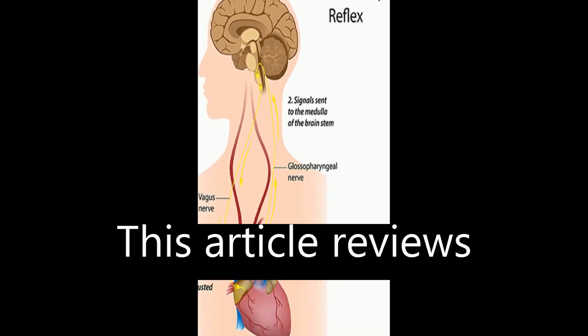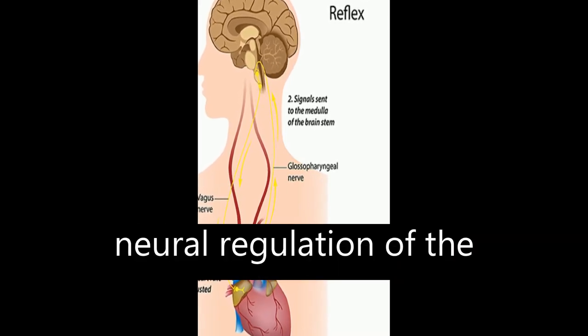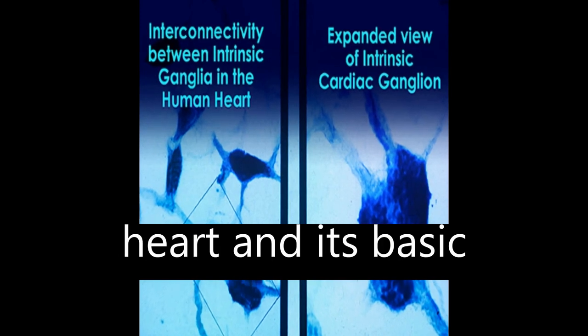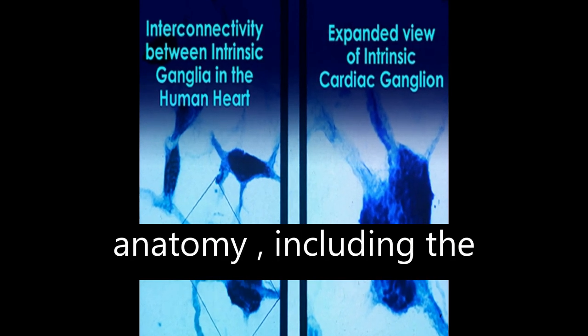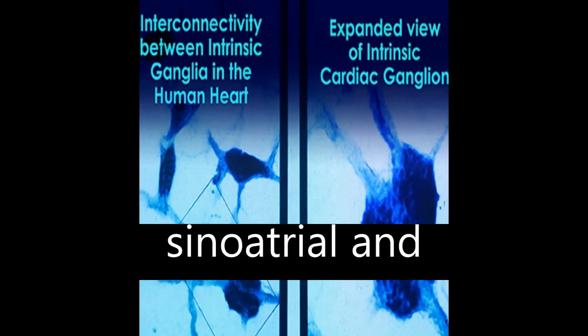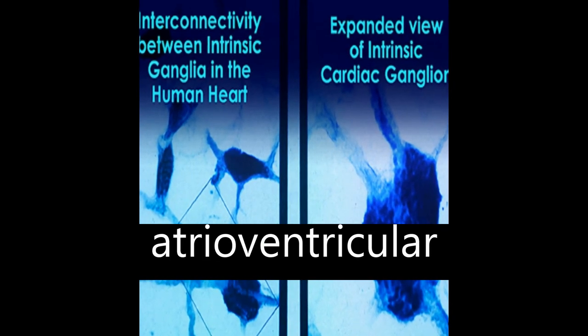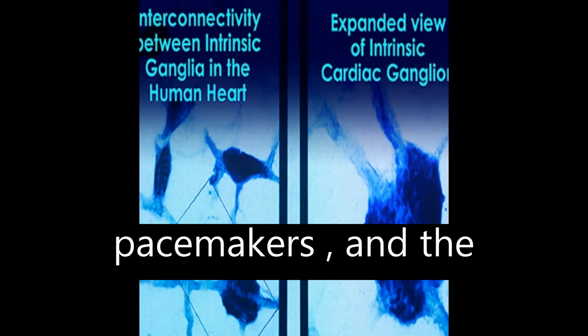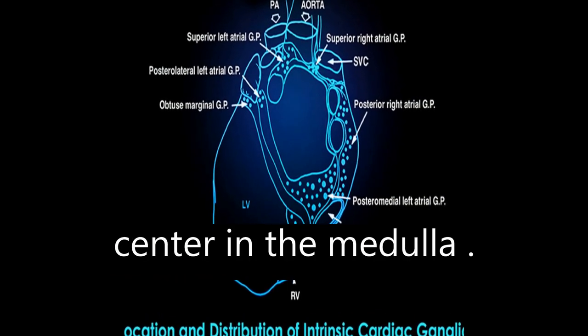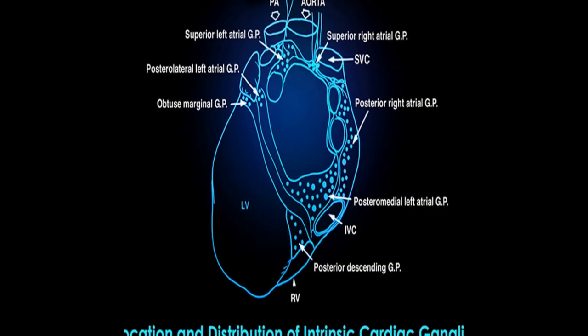This article reviews neuroregulation of the heart and its basic anatomy, including the cardiac cycle, sinoatrial and atrioventricular pacemakers, and the cardiovascular regulation center in the medulla.